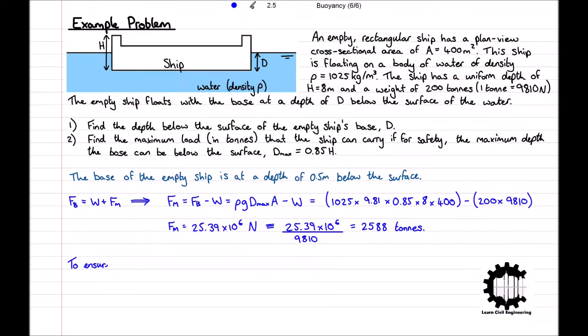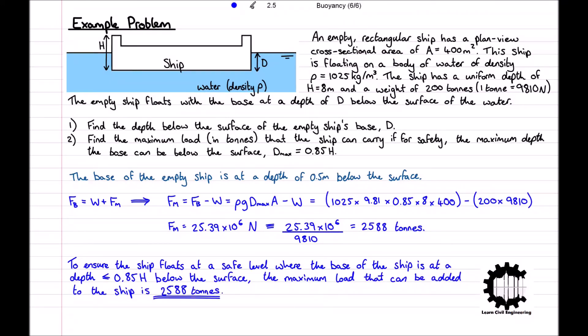So, we can conclude that to ensure the ship floats at a safe level where the base is at a depth no greater than 0.85h below the surface, the maximum load that can be added to the ship is 2588 tons, and we should note that it is required for the load to be added evenly to maintain symmetry.